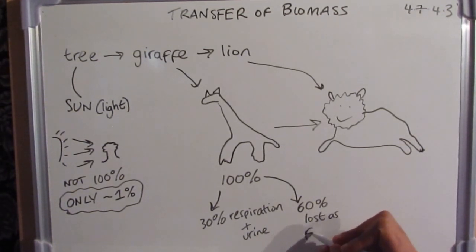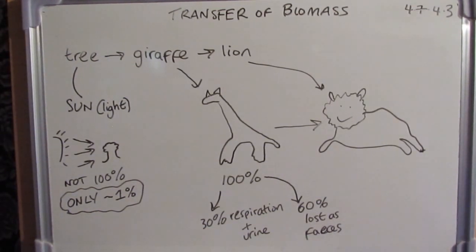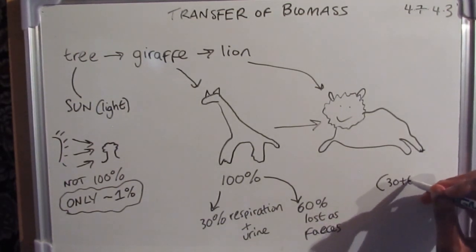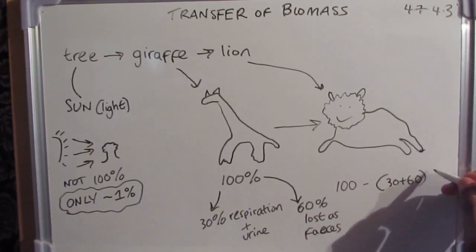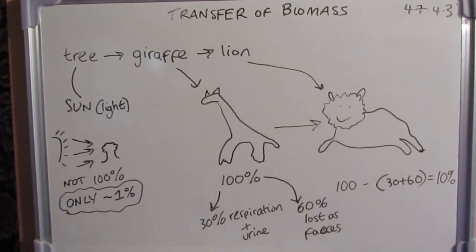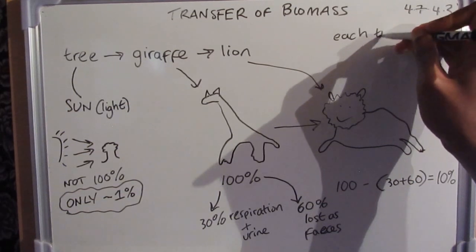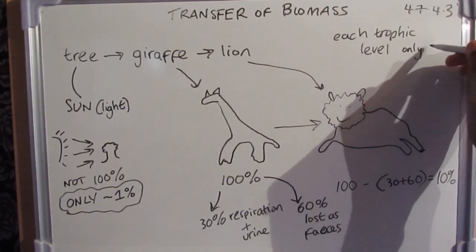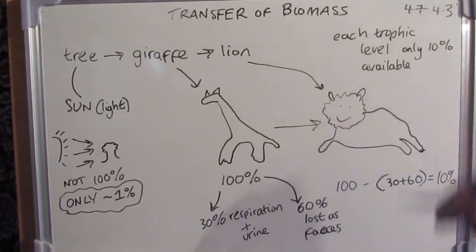That means a total of 90% of the initial 100% is not available for the lion. Doing the simple maths: 100 − 90 = 10%. This confirms that between each trophic level, only 10% of the biomass from the previous level is available for the next — which is not a high amount.